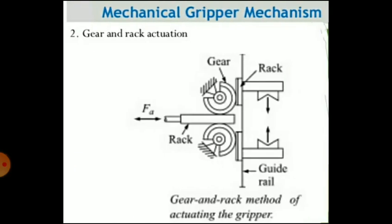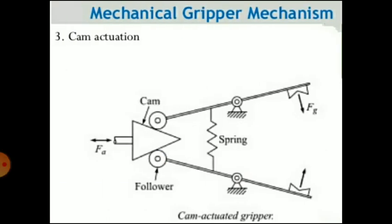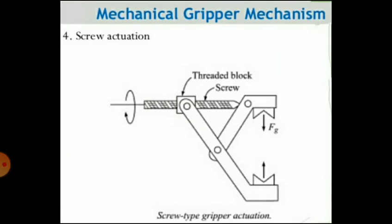Gear and rack actuation drives the jaws via a gear and rack mechanism. Cam actuation uses a cam and follower mechanism for actuating the jaws or gripper. Screw actuation is another method for actuating the gripper fingers.